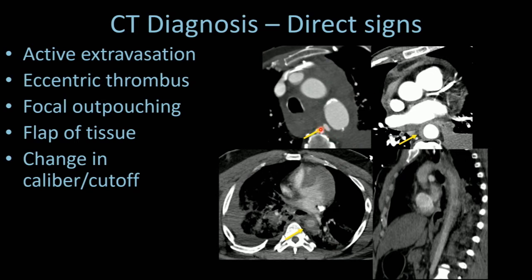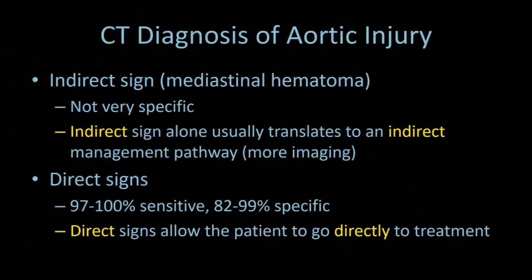This last direct sign is fairly rare. The patient on top has some contrast within the wall of their aorta with high attenuating material tracking. This is an intramural hematoma as a manifestation of acute traumatic aortic injury, blood in the wall of the descending aorta tracking up and down.